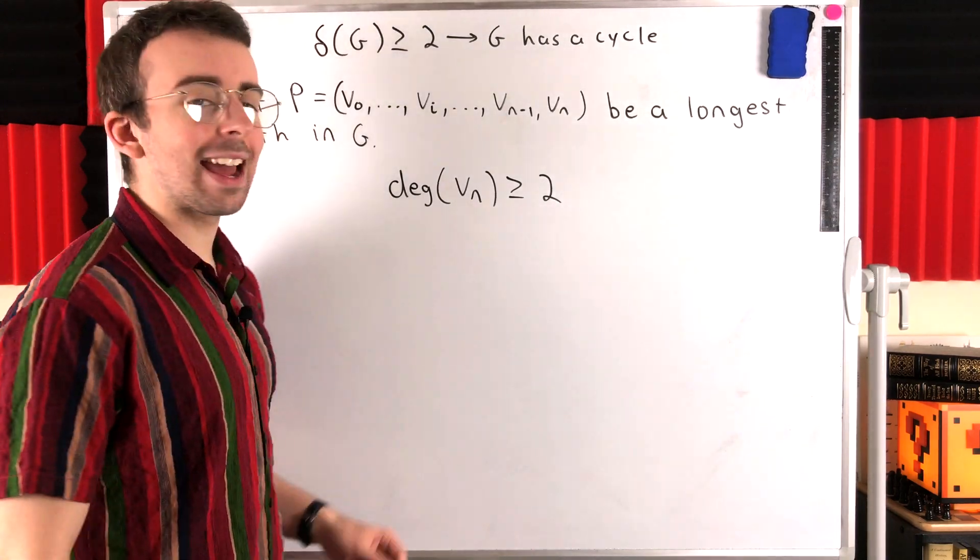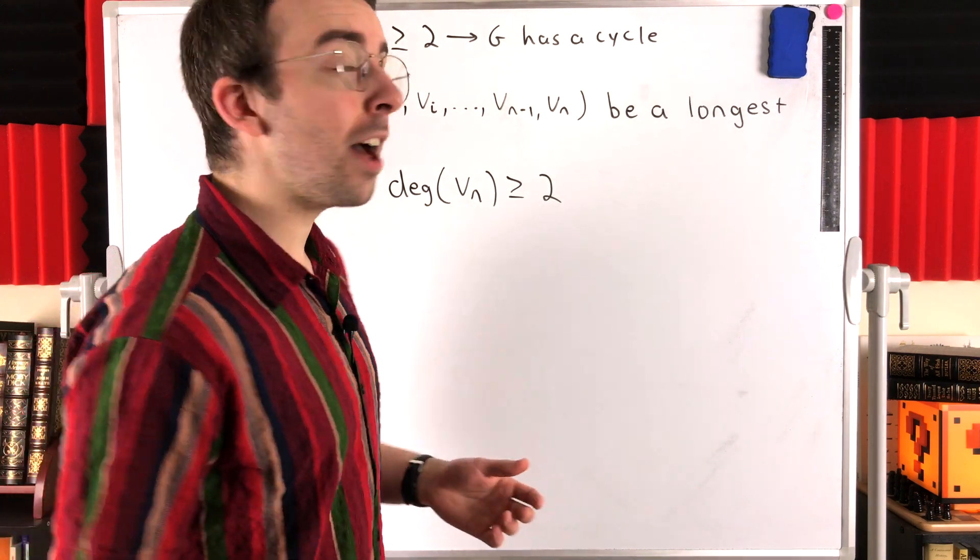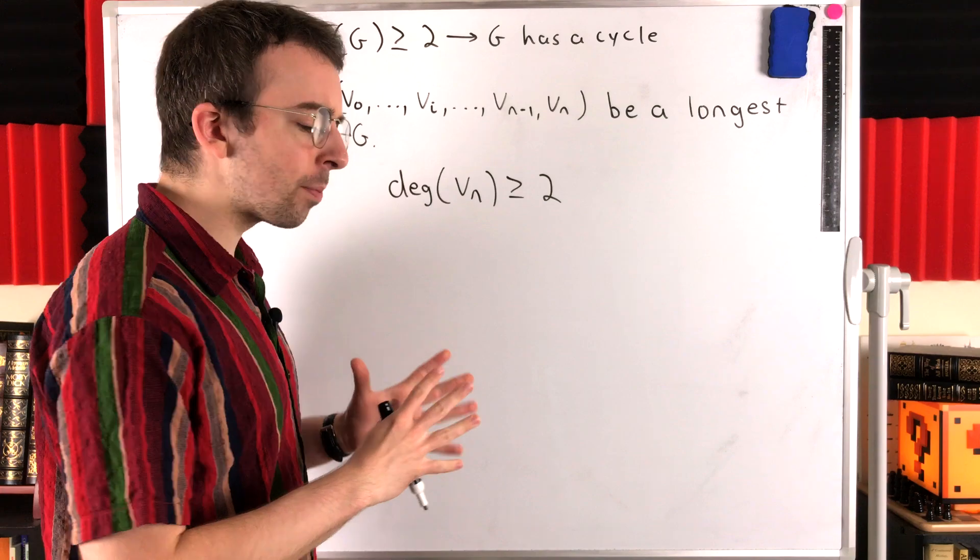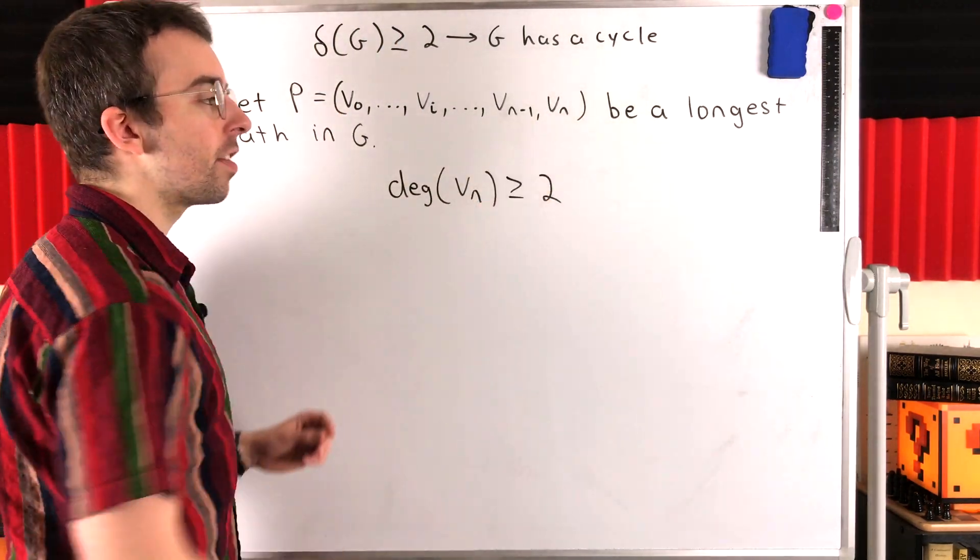But since VN has at least two neighbors, we know that VN has at least one other neighbor besides VN minus one. Now, if that other neighbor doesn't lie on the path P,